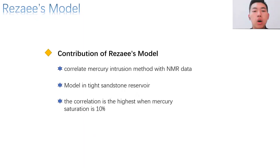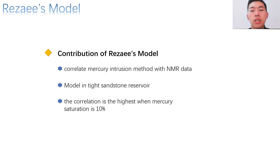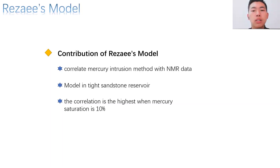Radzi correlated the mercury intrusion method with NMR data, also known as nuclear magnetic resonance data, and added a mathematical model between porosity and pore throat radius in tight sandstone reservoirs. In his model, the best correlation is when mercury saturation reaches 10%. However, this saturation can be different because the pore structure is complex in rock samples. That explains the different base saturation between Pitman's model and Radzi's model.